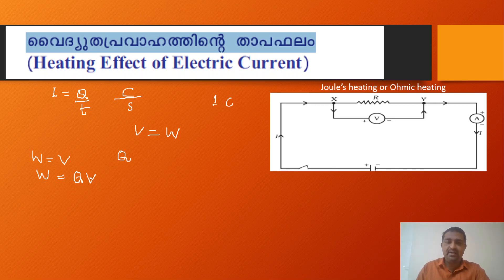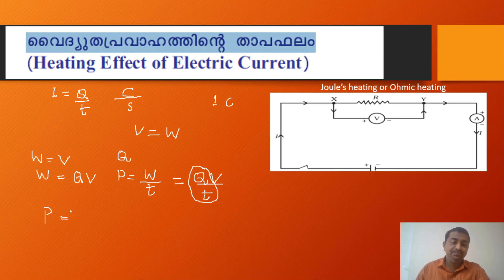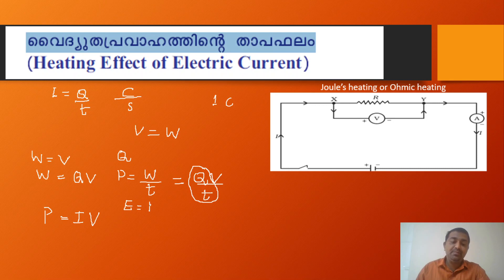We have the work done W = qV. Power P is equal to work done divided by t. Since W = qV and I = q/t, we get P is equal to I into V. Power equals I into V.